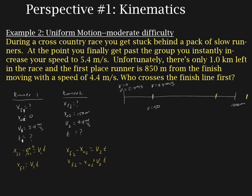Now if we check off what we know and what we don't know: x final 1 is unknown, v1 is known, t is not known. x final 2 is not known, x initial 2 is known, v2 is known, but t is not known. We're going to use these two equations to do our graph.